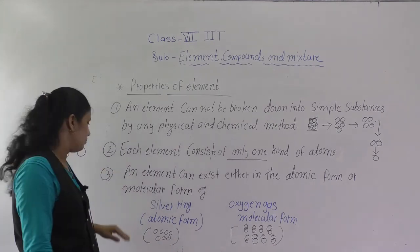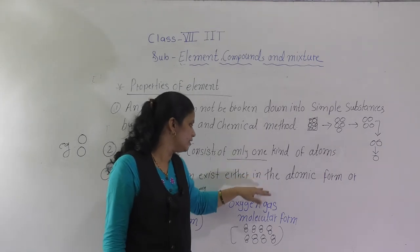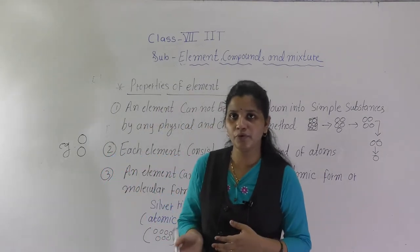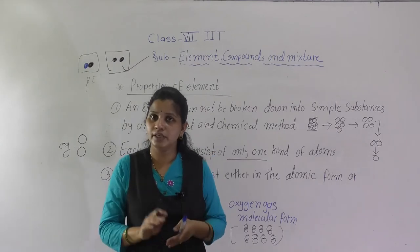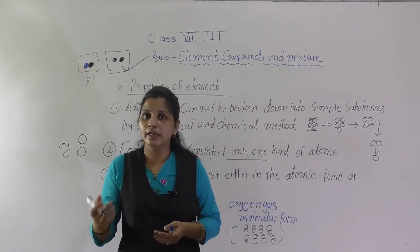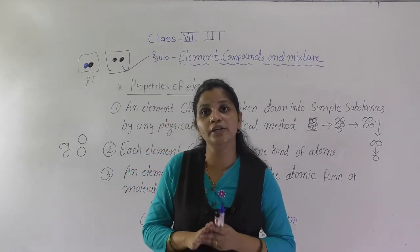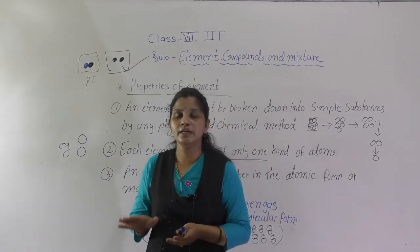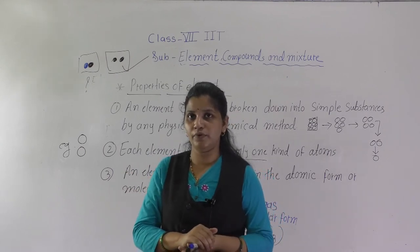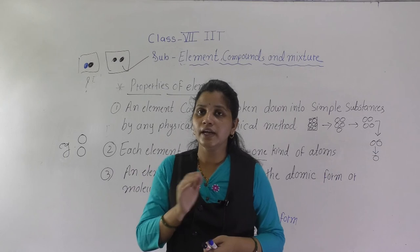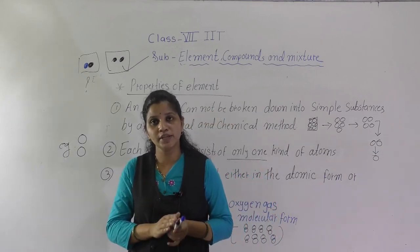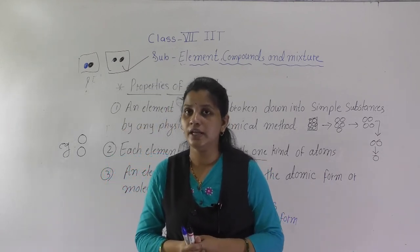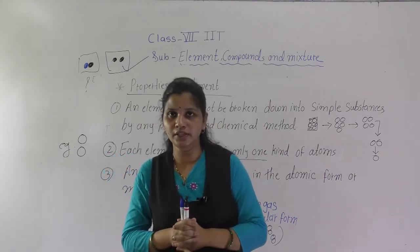So what is the third property of an element? An element can exist either in atomic form or molecular form. These are the properties of an element. In the last lecture I gave you notes to write in your chemistry notebook — the first 20 elements list with their symbols. In the next lecture we are going to see element names. So today we will stop here. Thank you.